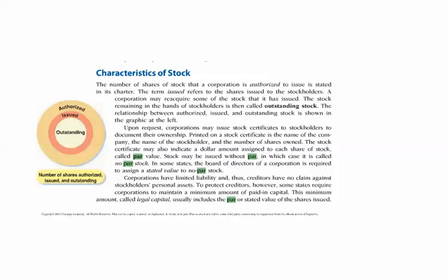So the state says we need to know what par is, and you go, make it $10, make it $1, whatever. And all that does is it gives us an extra journal entry to make. It really doesn't have any relevance to what we're doing. So we'll record the entry to the issuance of the stock. We'll debit cash for the full amount. We will credit common stock for the par or stated value.